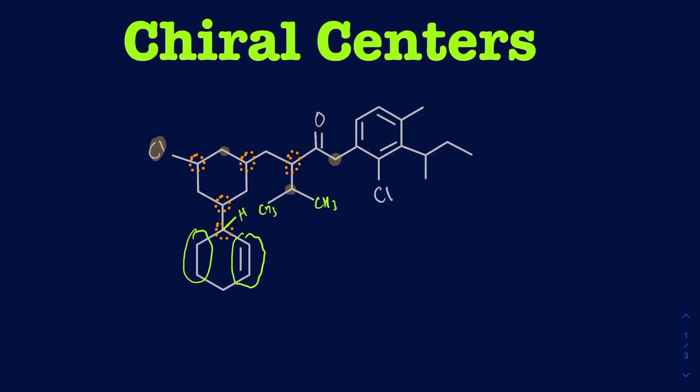The only other thing I see here is actually going to be this particular carbon right there — that's going to be another chiral center, because you've got a methyl on the bottom, an ethyl on the right side, a hydrogen, and then this ring on the left side. That's all I really see in terms of the number of chiral centers.